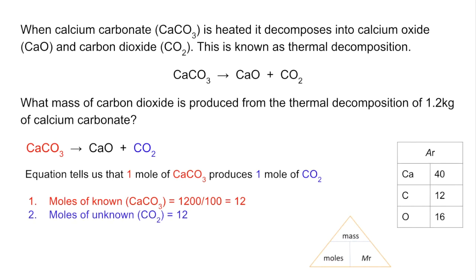Step two: moles of unknown. So we get this from the mole ratio - there's a one to one ratio between calcium carbonate and CO2. So if we've got 12 moles of calcium carbonate, we're going to make 12 moles of CO2. And then the third and final thing, we convert the moles of the unknown into the mass, which is what we've been asked to do. That's just moles times Mr: 12 times 44 = 528 grams.